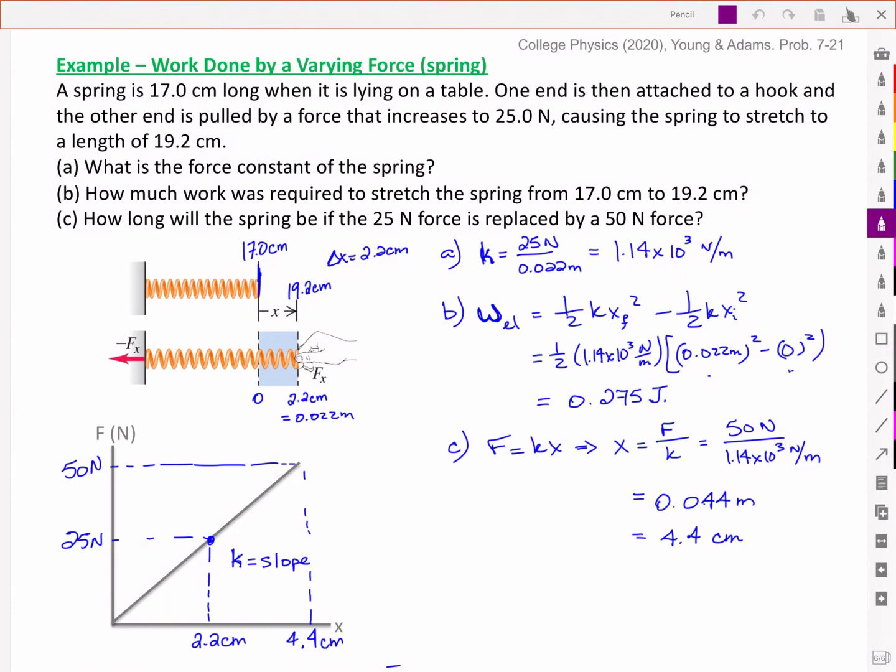What about the work done in that last case? What would the work be for that second position? So you'll notice in this last part that I added, when I doubled the force to 50 newtons, I doubled the displacement. But I more than doubled the work that's being done. So remember, work is the area under the curve. So here was the area or the work to take it to 2.2 cm.